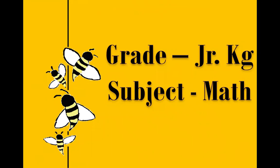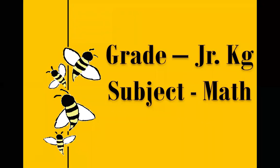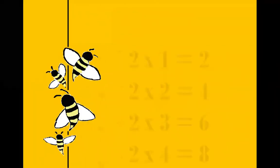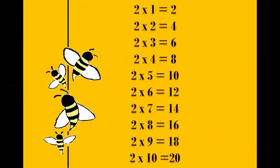Hello everyone, today is a math class and we are revising the table of two. Let's repeat: two ones are two, two twos are four, two threes are six, two fours are eight, two fives are ten, two sixes are twelve, two sevens are fourteen, two eights are sixteen, two nines are eighteen, and two tens are twenty. I hope you have learned the table of two.